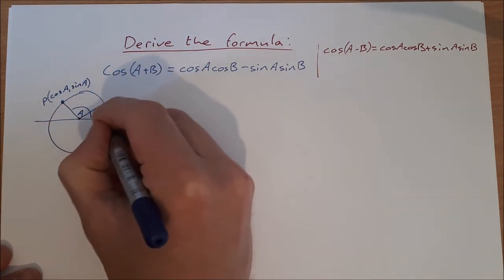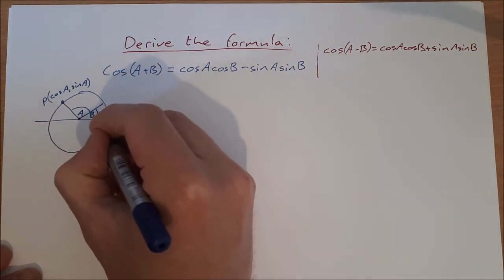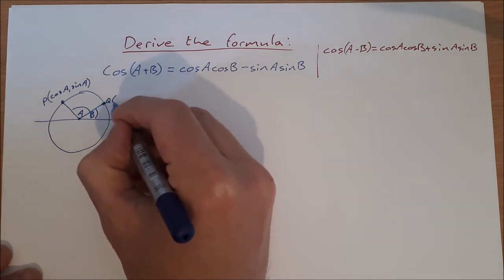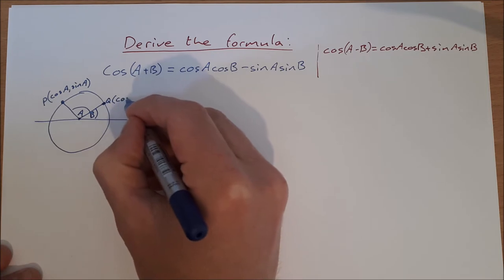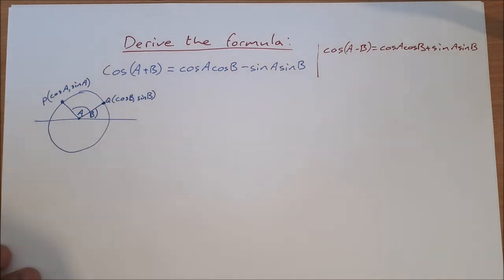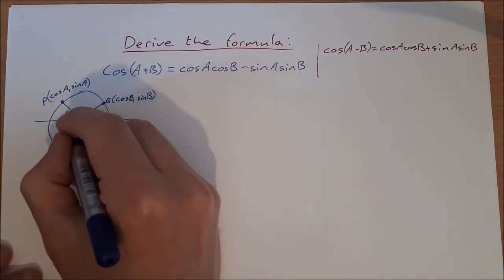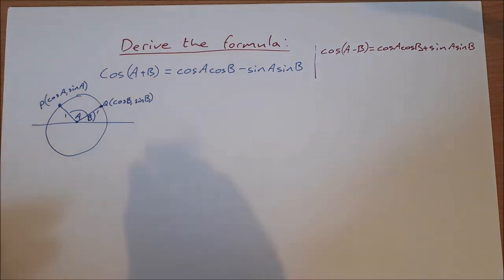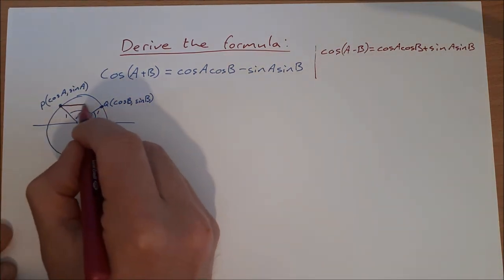And I'm going to put in an angle B. That'll give me a point here that we'll call Q, with coordinates cos B, sin B. And then the length of those, of course, are one. And I can join the point P to the point Q, like so.